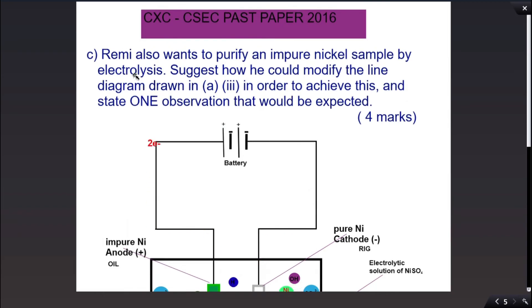Part C says Remy also wants to purify an impure nickel sample using electrolysis. Suggest how he could modify the line diagram drawn in part three in order to achieve this, and state one observation that would be expected.